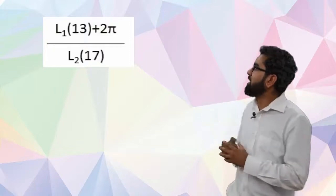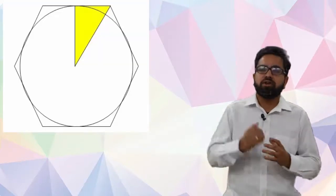Now one way to solve this question is to find value of L1(13) and L2(17). And how can we solve this? We can solve this by drawing a perpendicular from the center of the circle onto the midpoint of the side.